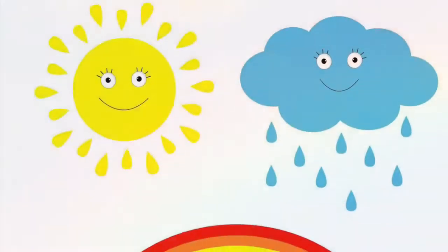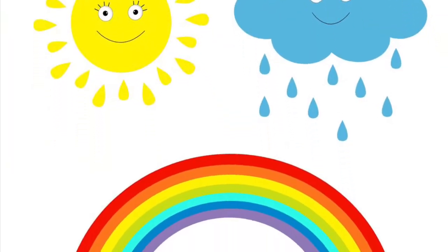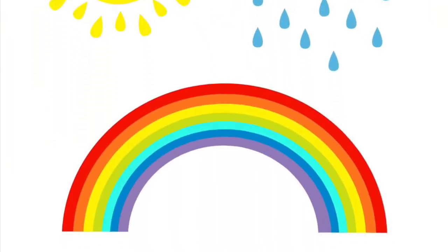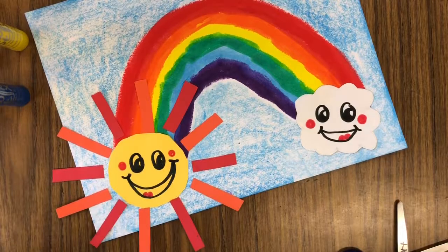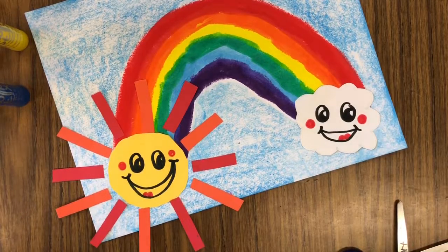Did you know that a rainbow is created when sunlight passes through water droplets, breaking the light into all of the different colors of the rainbow? Today we are going to create a rainbow collage painting with a happy sun and rain cloud.